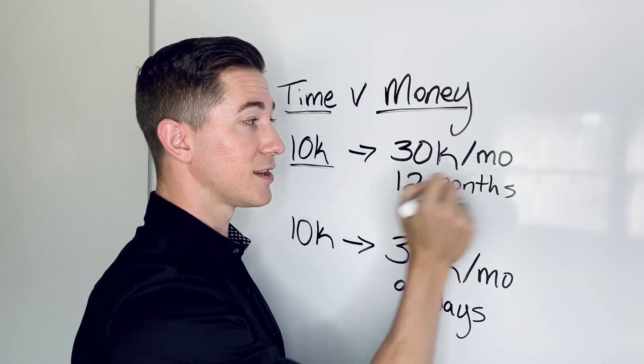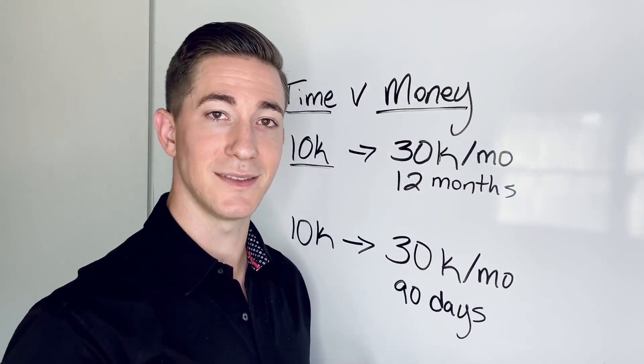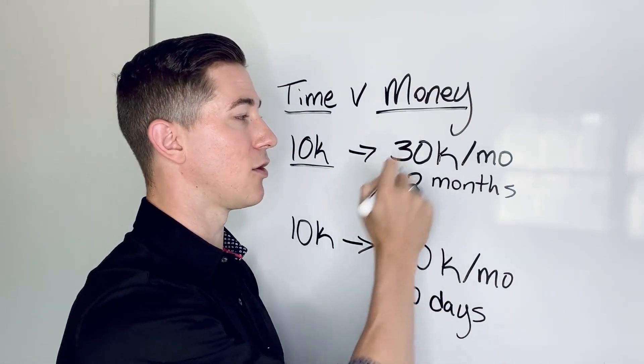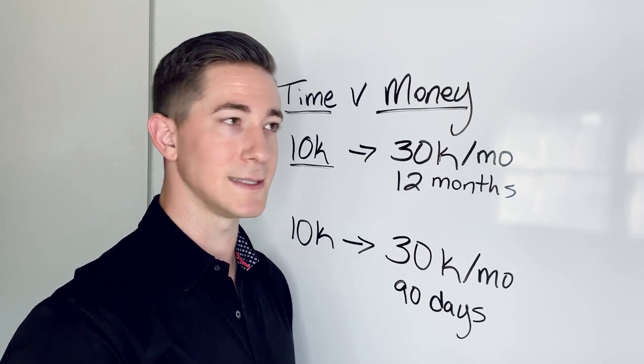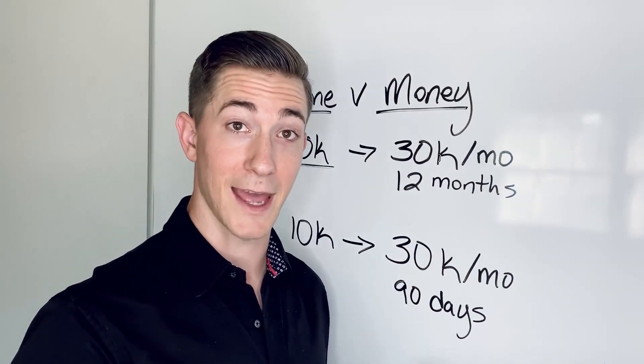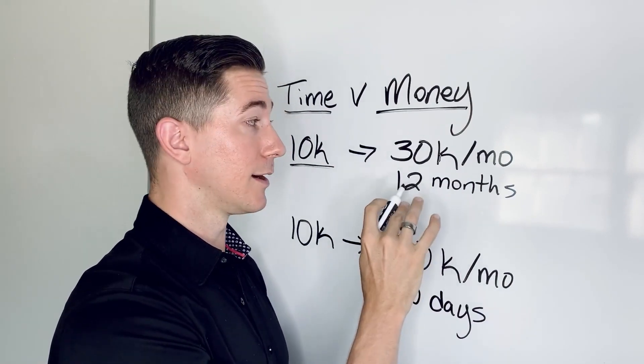So in order to get to $30K, option number one is you can try to figure this out on your own. And typically, if you're going to try to figure this out on your own, it's going to take you probably 12 months, if not more than that, to try and get to this level consistently on your own.